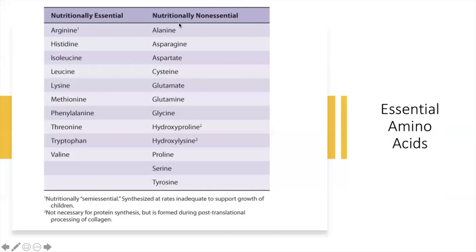This table is lifted from the mother book — it shows what we call the nutritionally essential and nutritionally non-essential amino acids. A friendly tip: do not memorize the nutritionally non-essential. Rather, memorize the nutritionally essential amino acids.